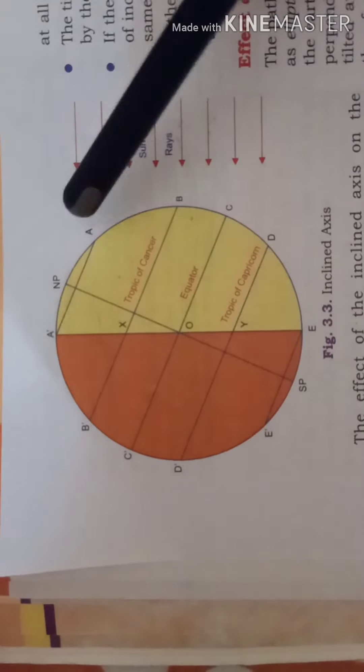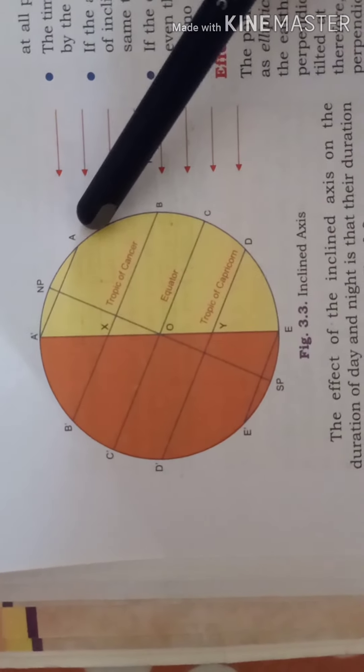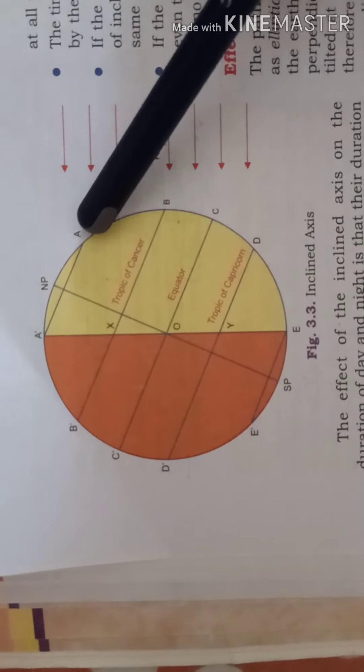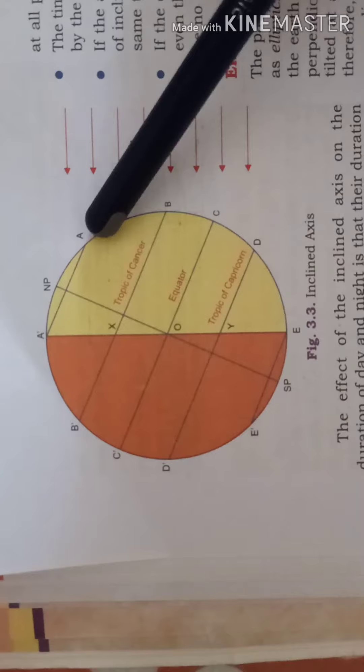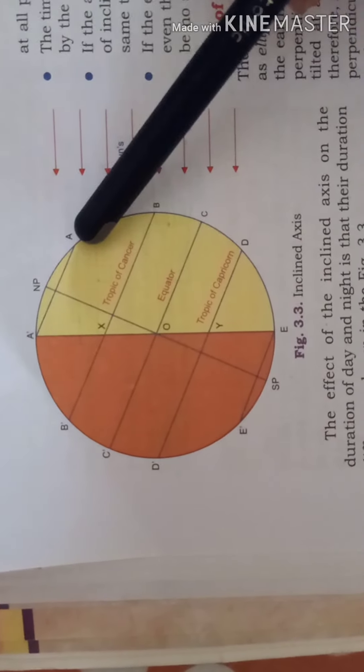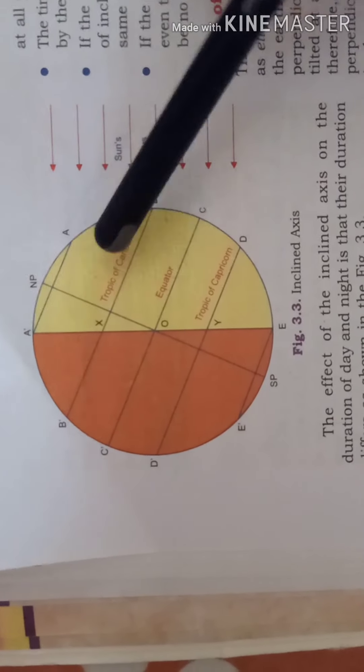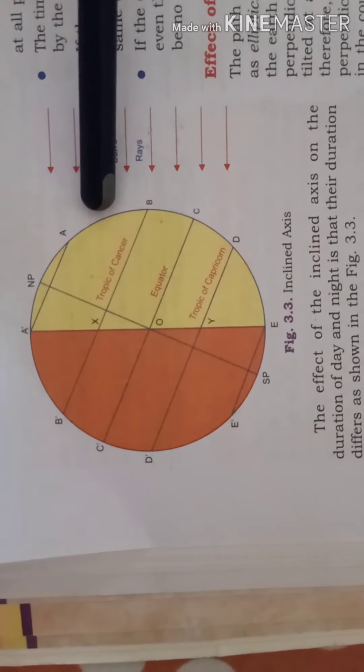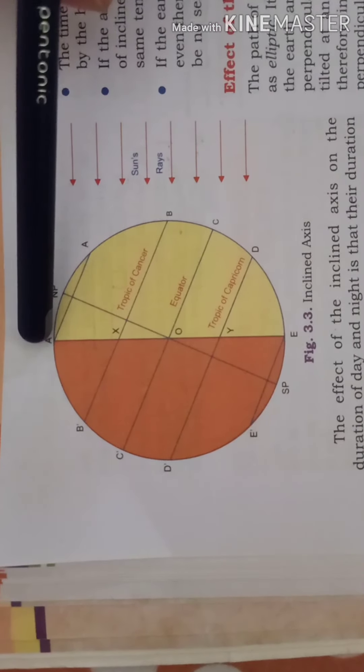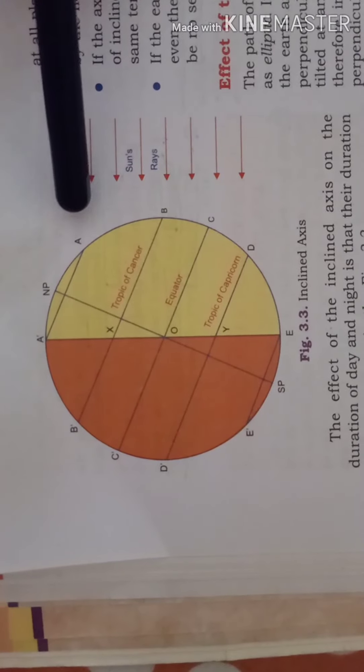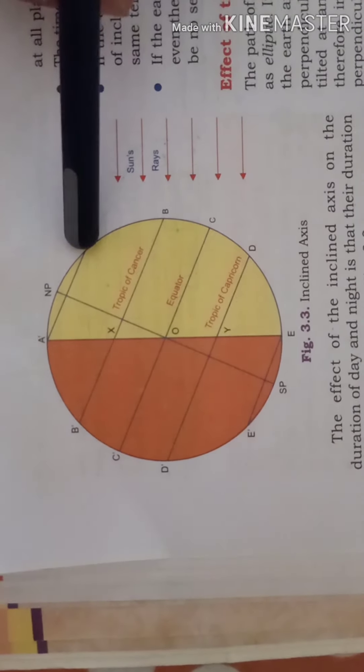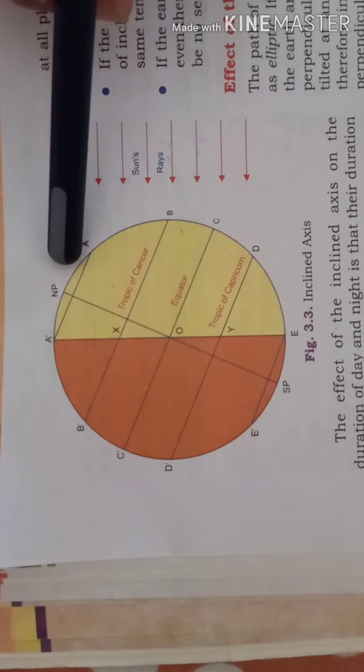Then if you see this place A, you all must have studied in your lower classes that during summer in the north polar regions there is 24 hours of light for 6 months. Over here there is continuous daylight. At the Arctic Circle place A will be at position A' after 12 hours. But A' remains in continuous light in summer. So there is 24 hours light for 6 months in the north polar region.